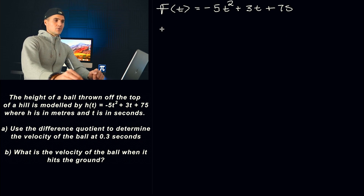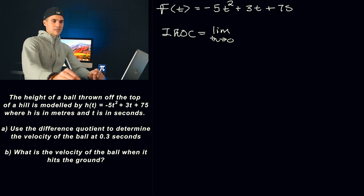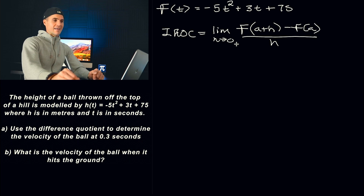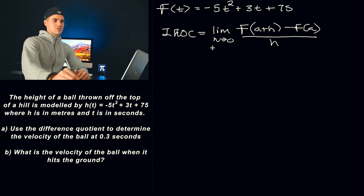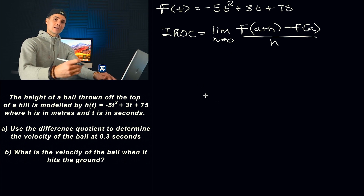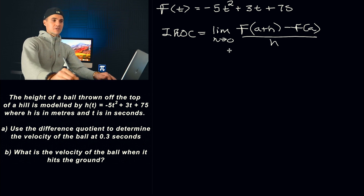As we know, the instantaneous rate of change is the limit as H approaches 0 of F of A plus H minus F of A, all over H. All this limit means is that at the end, once we do all the algebra and simplification and get rid of the H in the denominator, we then plug in H equals zero to get the exact velocity.